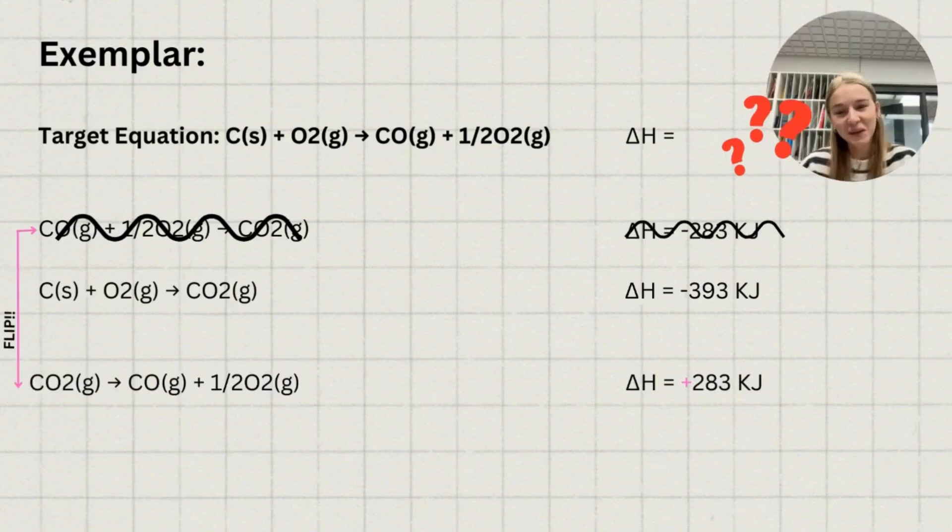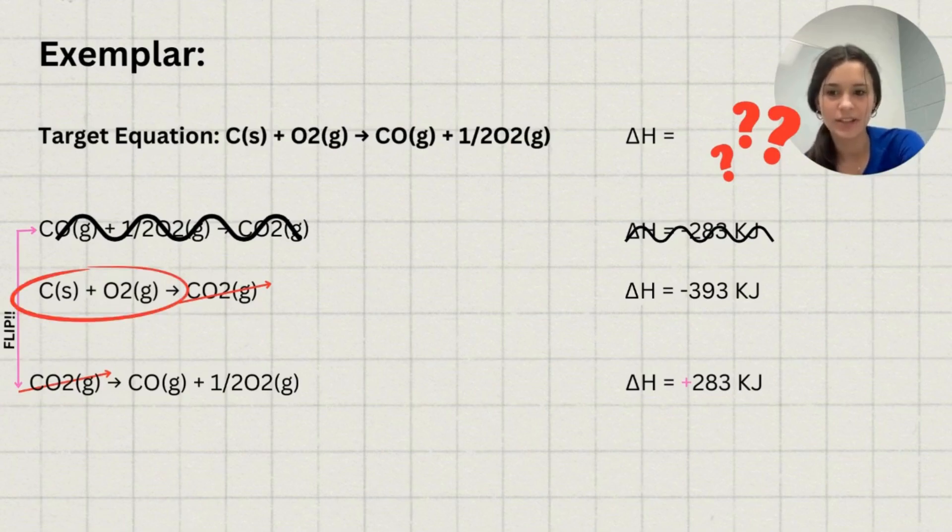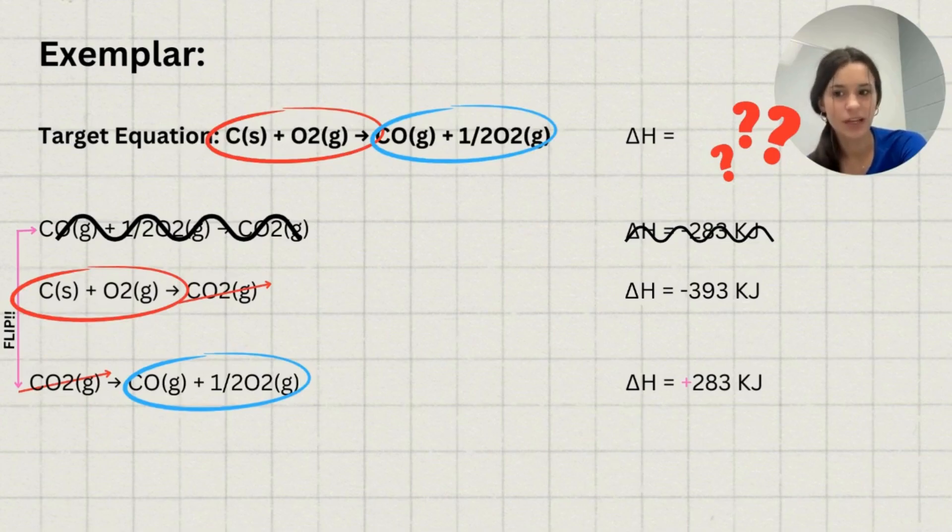Our next step will be simplifying the equations to match our target. This is done by canceling out elements that are the same but on opposite sides of different equations. So for example, in the first equation, we have one mole of CO2 on the reactant side. In the second equation, one mole of CO2 on the product side. Because these elements are the exact same and on different sides of opposite equations, we can cancel both of them out. When we look at our equations, we have all the correct reactants and products that match our target reaction. Now that we have changed our delta H values accordingly, we can move on to the delta H value of our target equation.